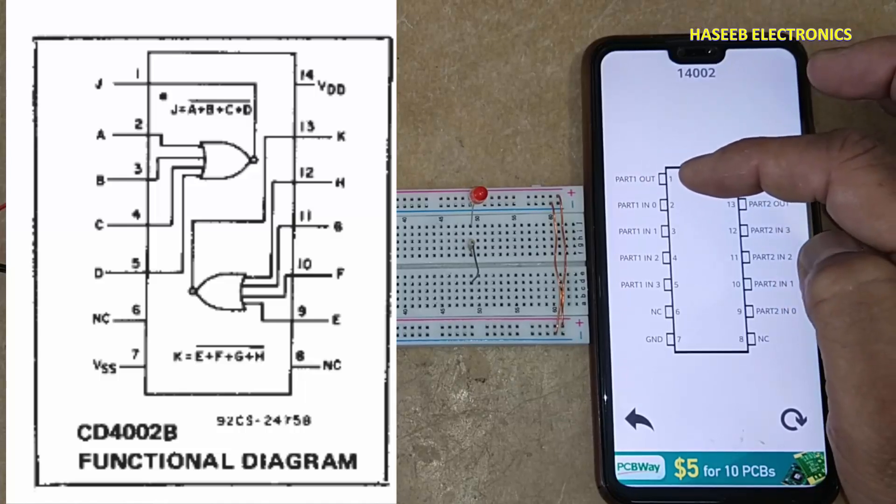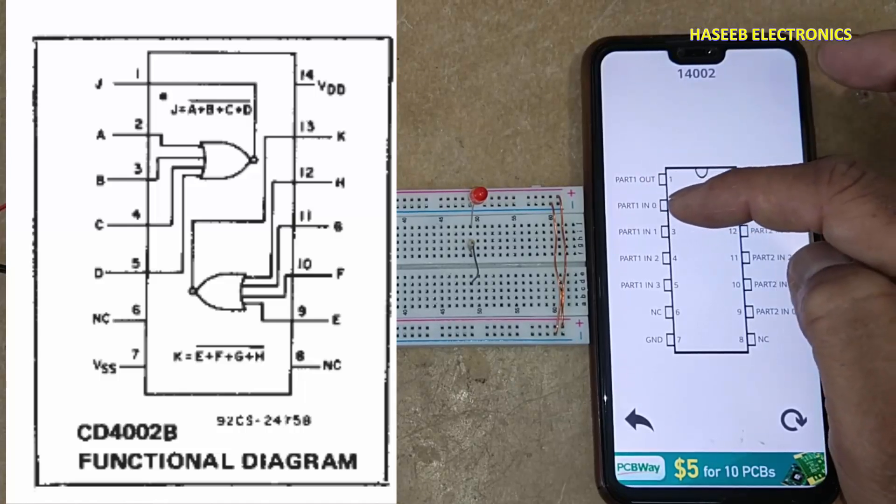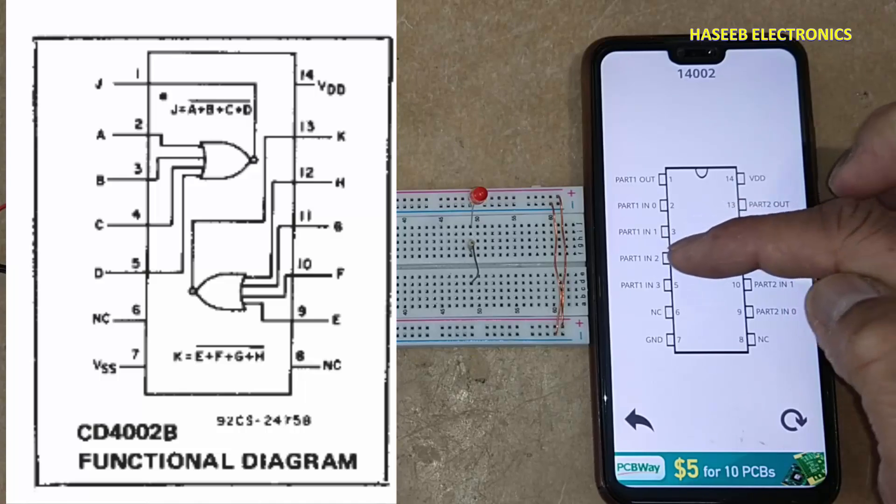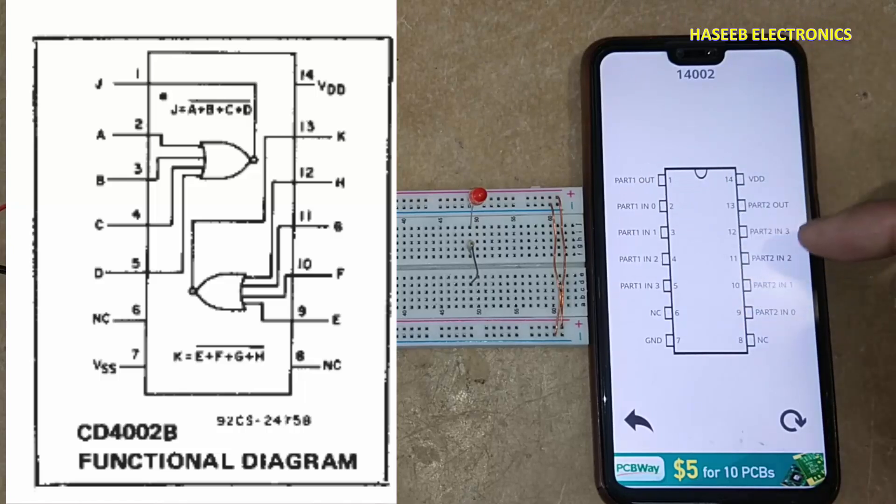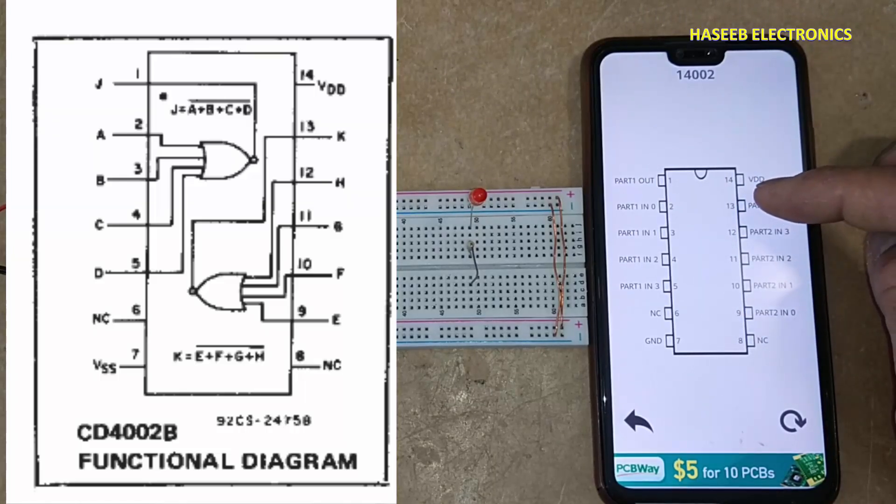Part one output is from pin 1. Part one inputs are pins 2, 3, 4, and 5. These left side pins are for the first gate. The second gate output is from pin 13, with inputs at pins 9, 10, 11, and 12.